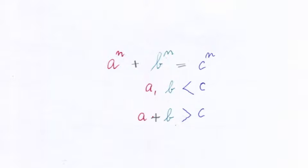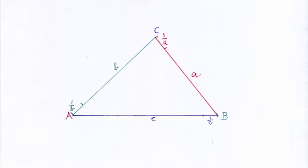If you let a equal 1, b equal 2, c equal 3, and n equal 2, you get: for a squared, 1; for b squared, 4; and for c squared, 9. Thus a plus b must be much larger than c for Fermat's formula to work. Here is our Fermat triangle ABC, on which side c must be the longest side.